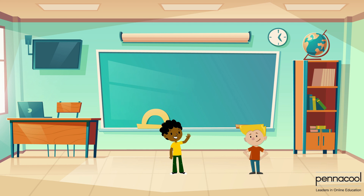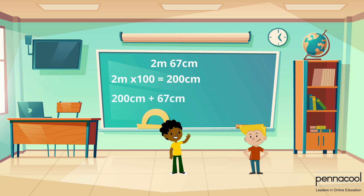Can you represent the length 2 meters and 67 centimeters in centimeters only? We change the 2 meters to 200 centimeters, then combine the 200 centimeters with the 67 centimeters. This gives us 267 centimeters.